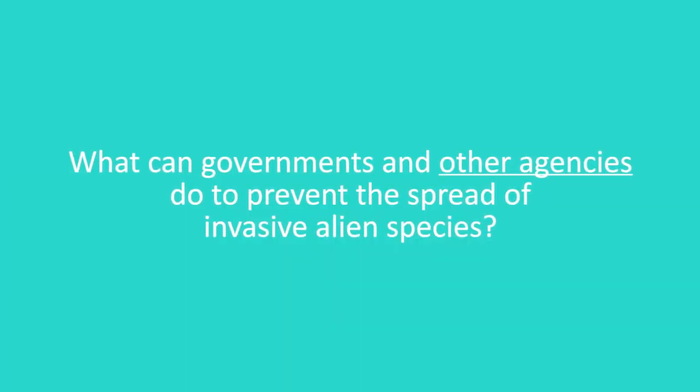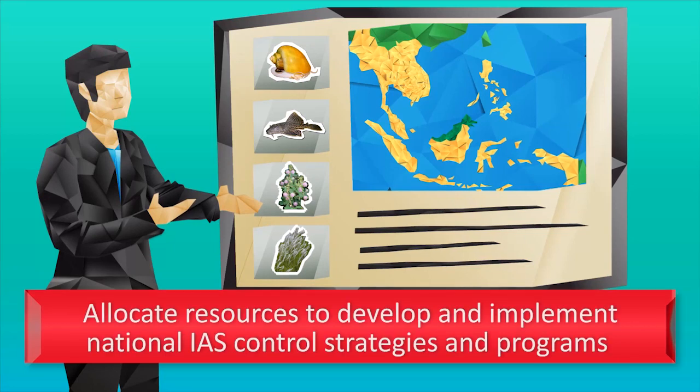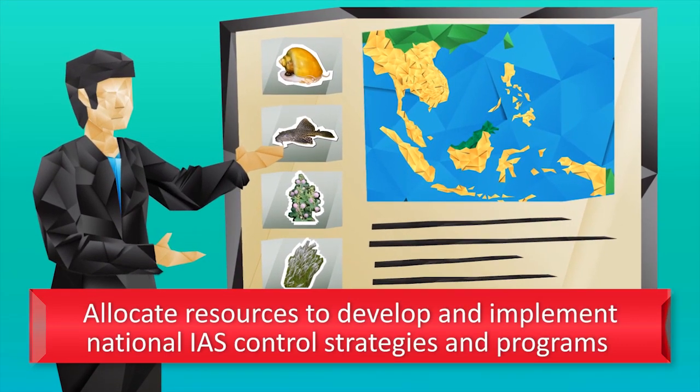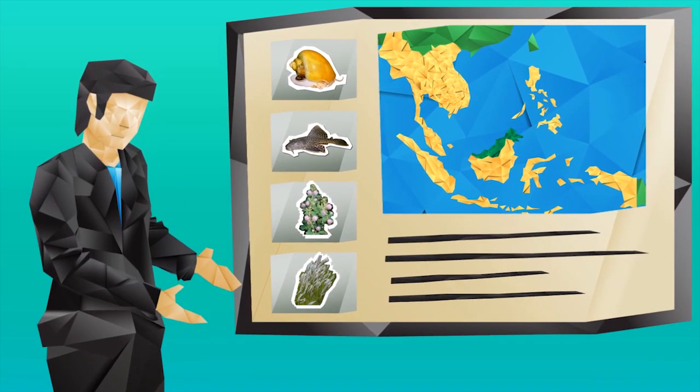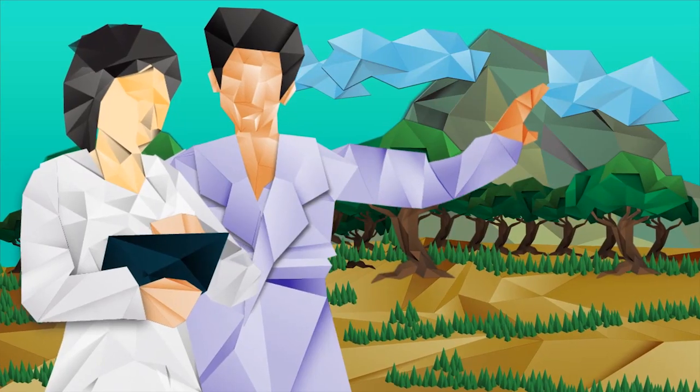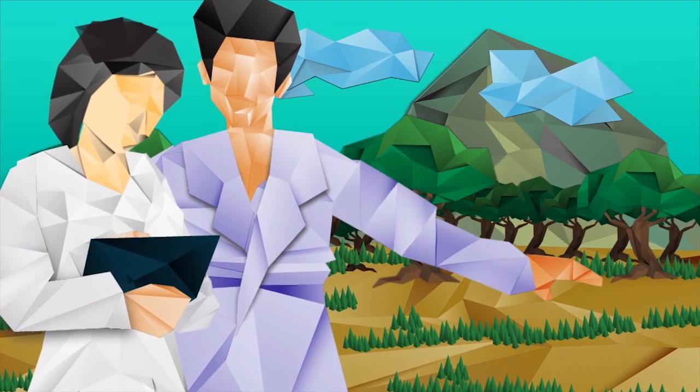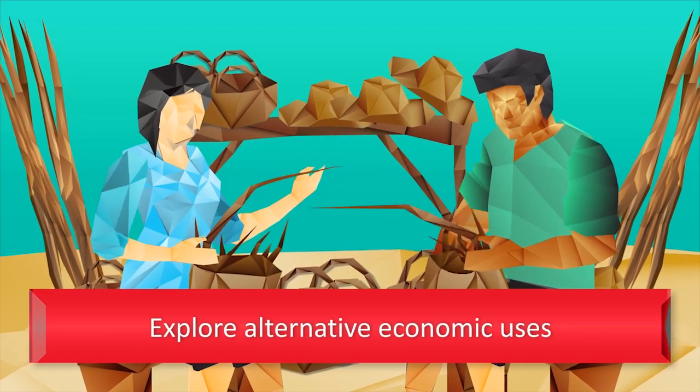What can governments do to prevent the spread of invasive alien species? Governments should allocate resources to develop and implement national control strategies and programs based on research results on invasive alien species physiology and pathways. They should undertake national invasive alien species surveys for early detection and explore alternative economic uses.